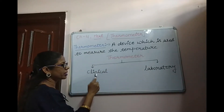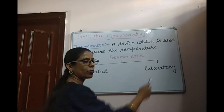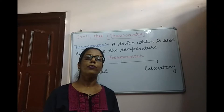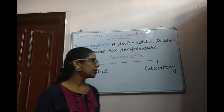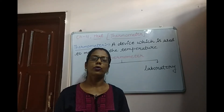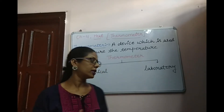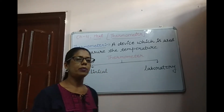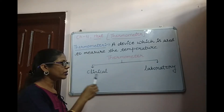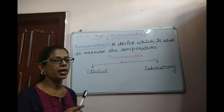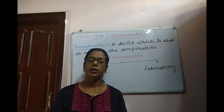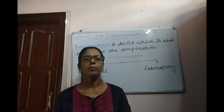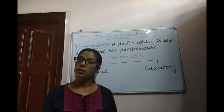Basically, there are two types of Thermometer: Clinical Thermometer and Laboratory Thermometer. A Clinical Thermometer is used to measure the temperature of humans and animals' bodies. A Laboratory Thermometer is used to measure the temperature of any other object — other than humans and animals — and you can find it in the school lab. Other types of thermometers are also available, like Alcohol Thermometer and Digital Thermometer, which is commonly used nowadays.